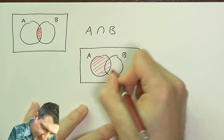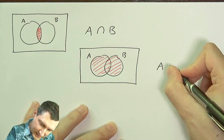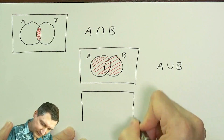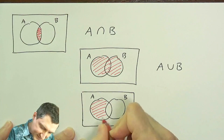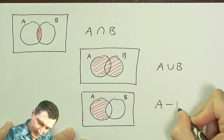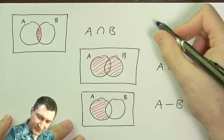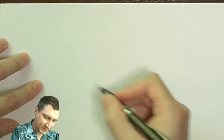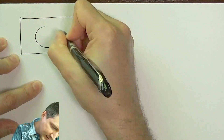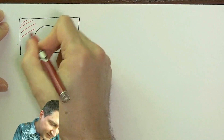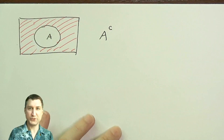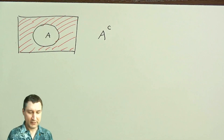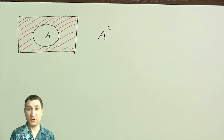For two events A and B, the stuff that is in either event is called A union B. The stuff that is in A but not also in B is called the set difference, A minus B. And finally, for all the outcomes that are not in A, this is called A complement, denoted with a little superscript C. If you remember all these basic set theory notations, you'll be well set for the stuff we talk about next time.